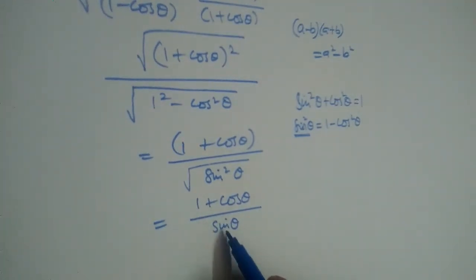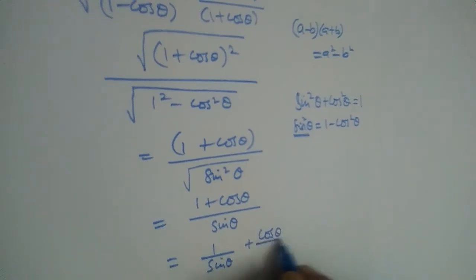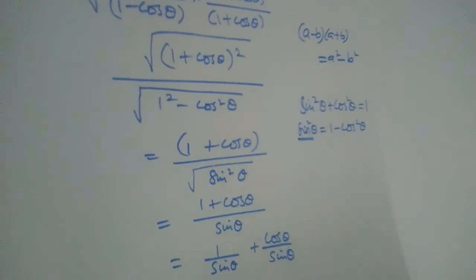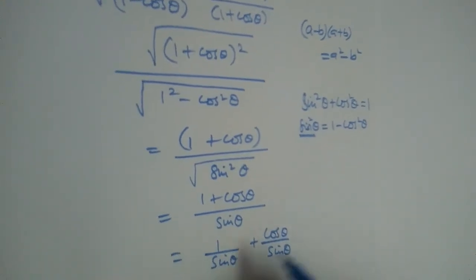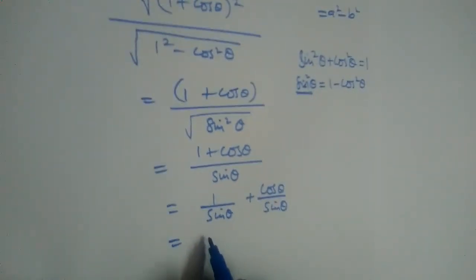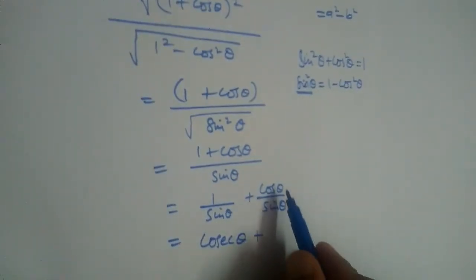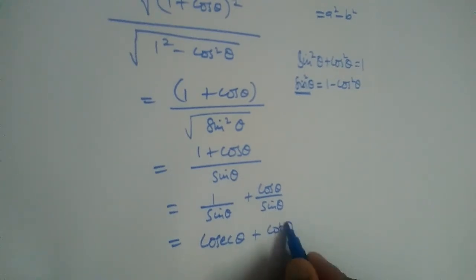So in the numerator we have 1 plus cos and in the denominator we have sin. Now let us write this as 1 by sin theta plus cos by sin theta. What is 1 by sin theta? Cosecant theta. And what is cos by sin theta? Cot theta.